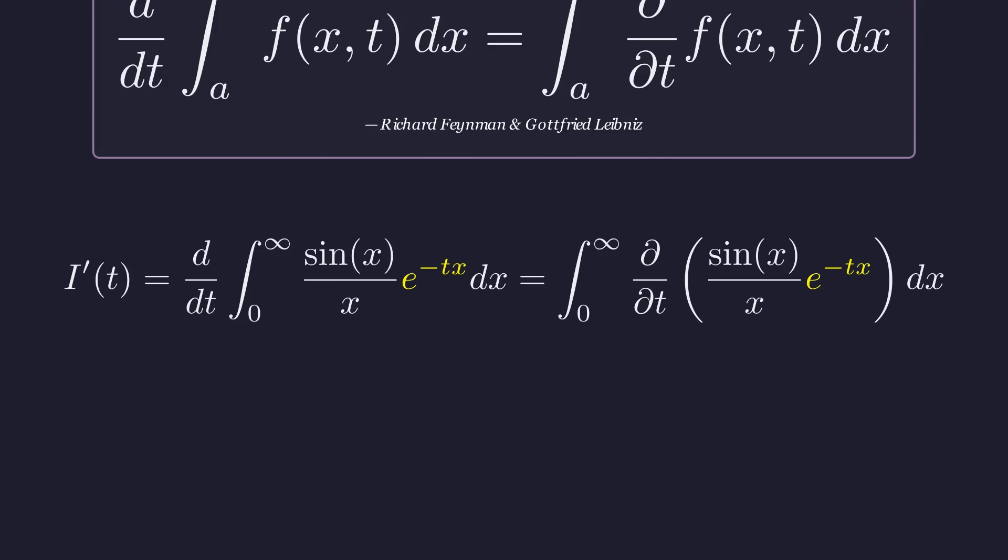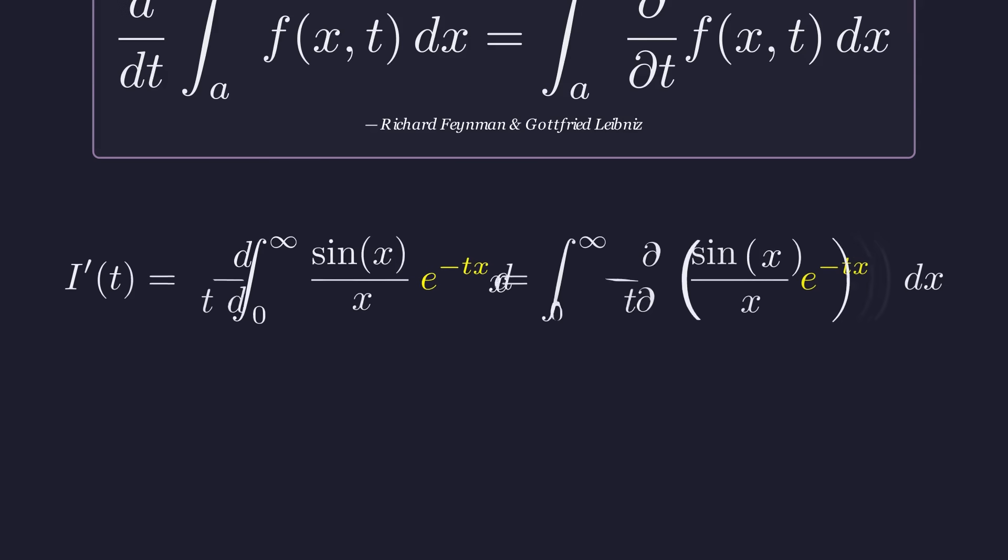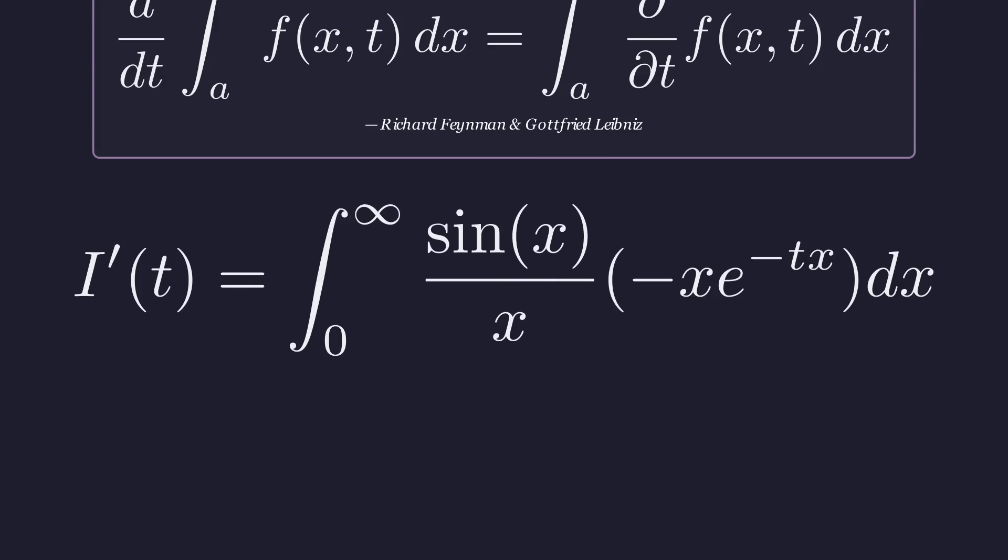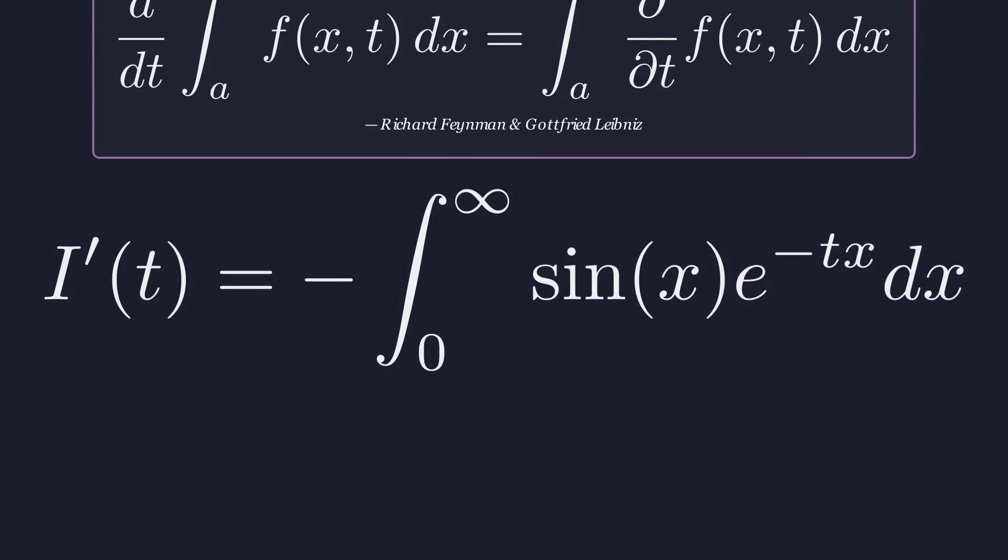The only term that depends on t is the exponential. The derivative of e to the power of negative t times x with respect to t is negative x times e to the power of negative t times x. Applying the derivative gives us this expression inside the integral. And just as planned, the x in the numerator cancels out with the x in the denominator. This is the magic of the technique. This leaves us with a much simpler integral to solve.